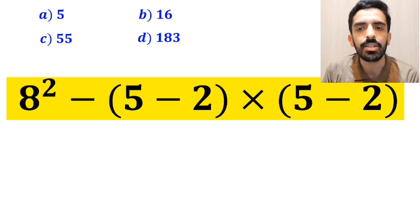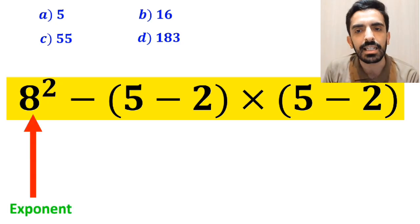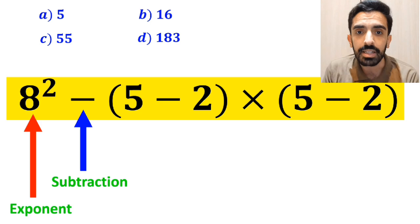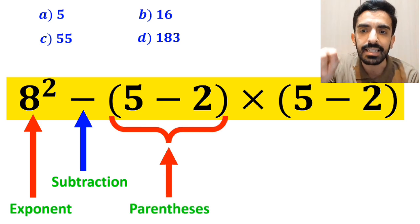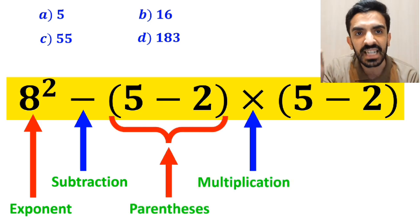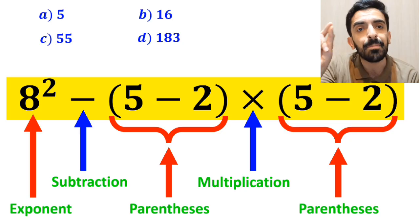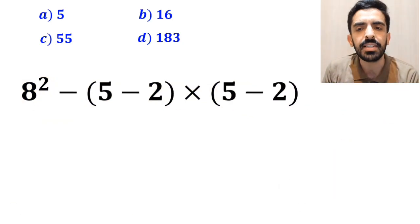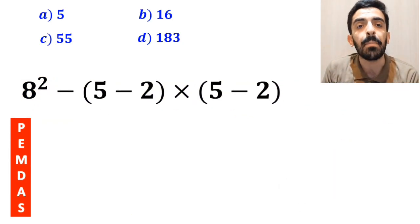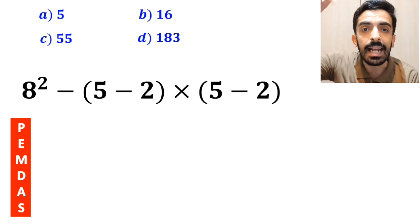As you can see on the screen, in this expression, first we have an exponent, then a subtraction sign, and after that parenthesis, followed by a multiplication, and finally another parenthesis. To solve this question, we must strictly follow the PEMDAS rule.